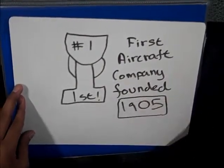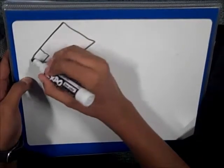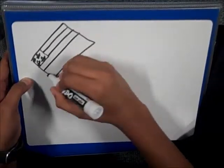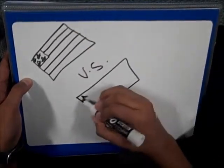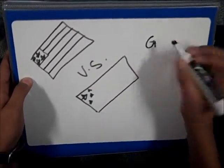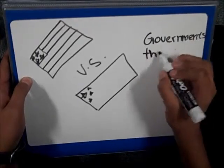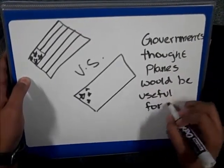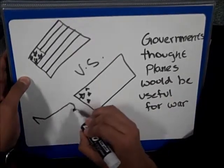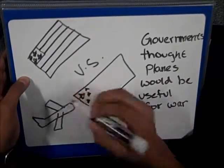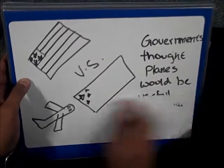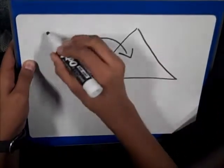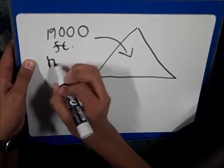Governments realized that planes would be ideal in the use of war. This boomed airplane production. These planes fought at 19,000 feet and could fly at a maximum speed of 130 miles per hour.